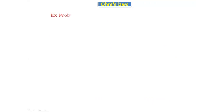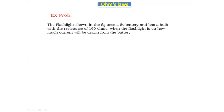Now let's look at an example problem. A flashlight uses a 5-volt battery and has a bulb with a resistance of 160 ohms. When the flashlight is on, how much current will be drawn from the battery? The circuit has a DC supply of 5 volts and a resistance of 160 ohms. Since we know V equals 5 volts and R equals 160 ohms, we use the formula I equals V divided by R.